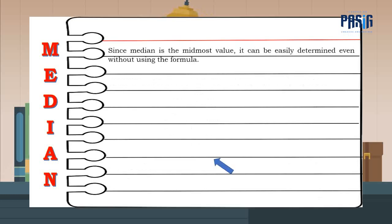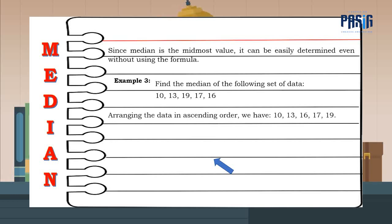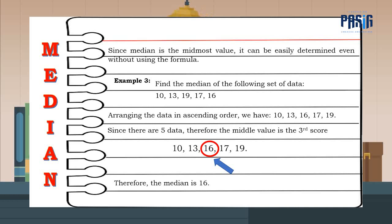Since median is the midmost value, it can be easily determined even without using the formula. Example number 3. Find the median of the following set of data. Arranging the data in ascending order, we have. Since there are 5 data, therefore, the middle value is the third score. Therefore, the median is 16.